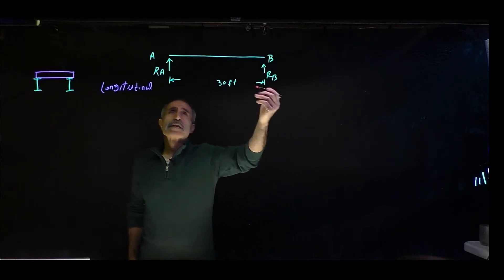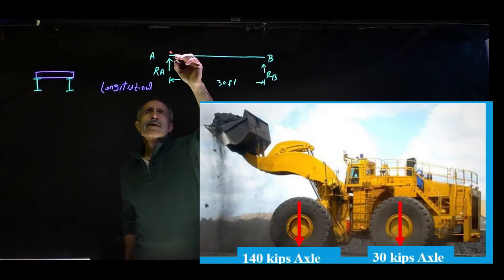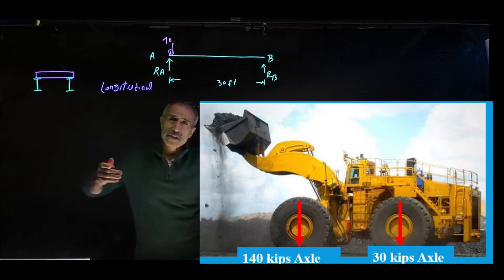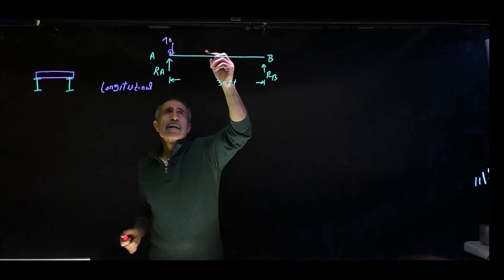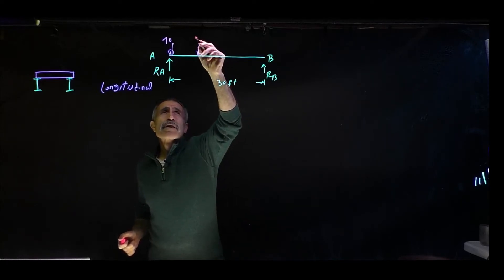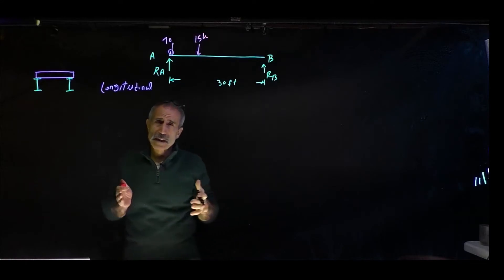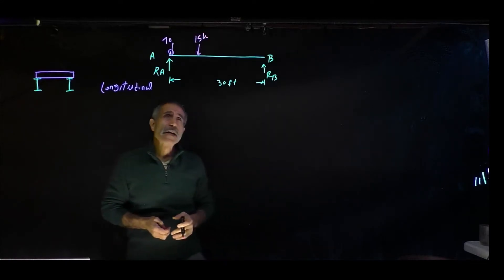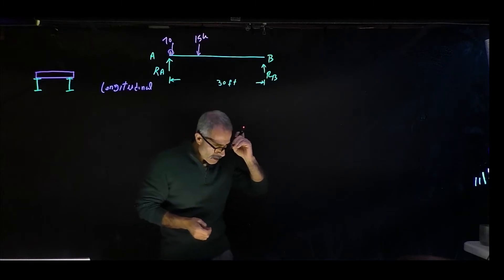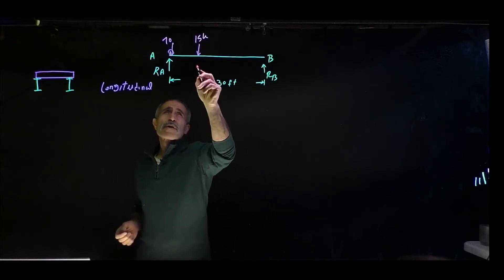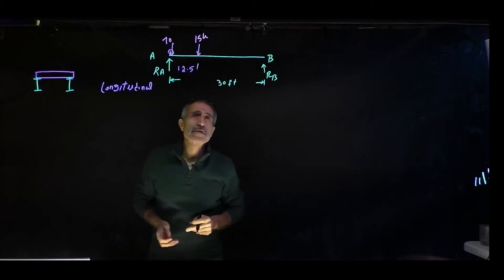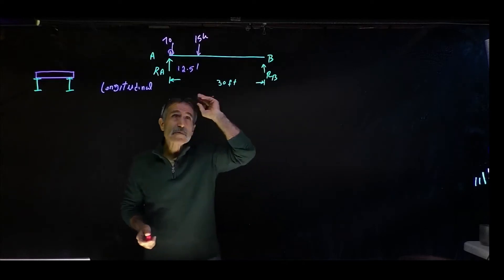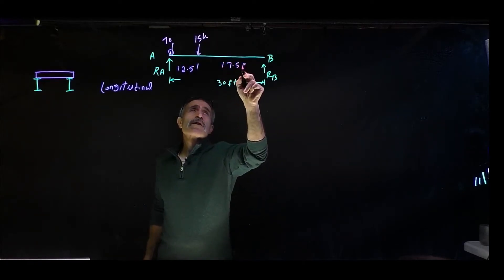First we'll go longitudinal. The front tire of the loader carries 70 kips — because the axle is 140 kips, so one tire is about 70 kips. The back tire carries 15 kips (half of the 30-kip axle). The spacing between the front and back axles is 12.5 feet, leaving 17.5 feet to the far support.